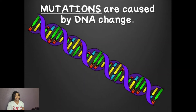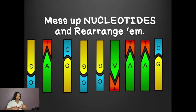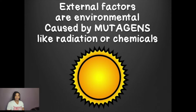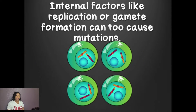Mutations are caused by DNA change — mess up nucleotides and rearrange them. External factors are environmental, caused by mutagens like radiations or chemicals. Internal factors like replication or gamete formation can also cause a mutation.